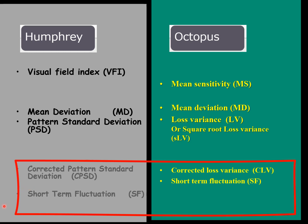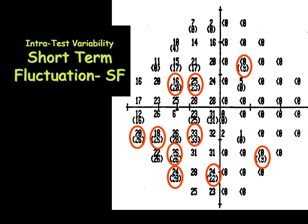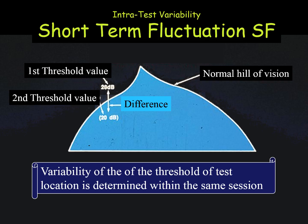Next is the short-term fluctuation and corrected pattern standard deviation, and in the Octopus the corrected loss variance. The short-term fluctuation — also called intratest variability — is measured by re-examining 10 points twice. For example, one location might give a sensitivity of 28 on the first test and 18 on the second. This is repeated for 10 points, and the standard deviation of these differences is the short-term fluctuation.